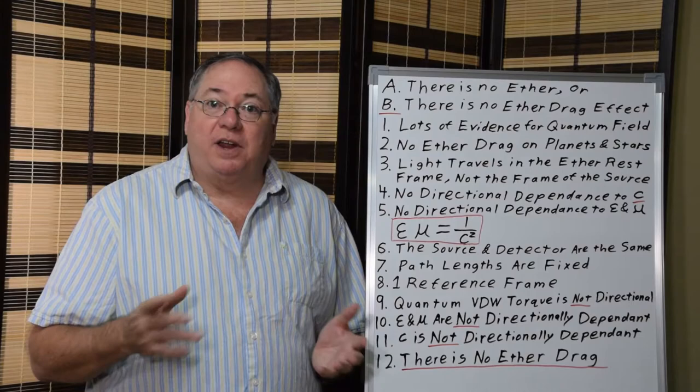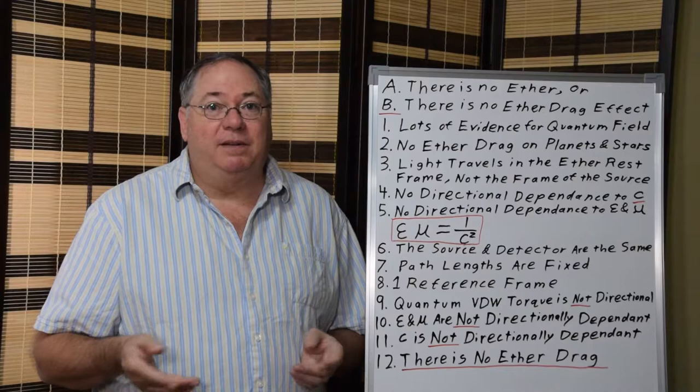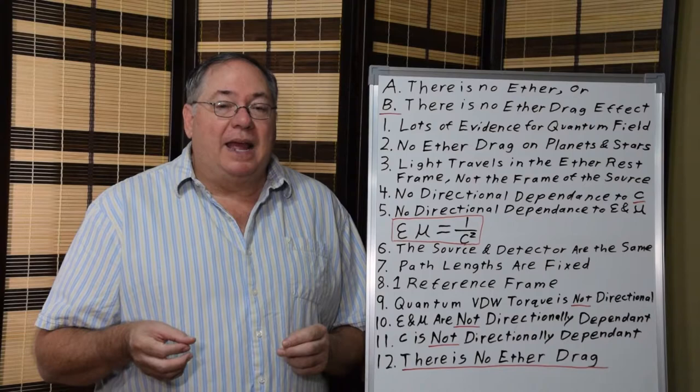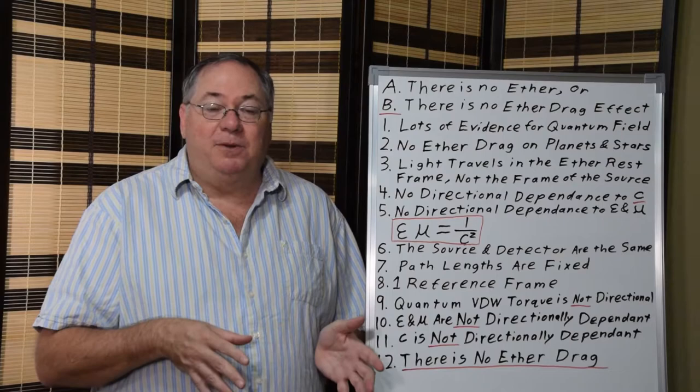And we have this relationship of the electric and magnetic constant multiplied together equals 1 over the speed of light squared. And within the quantum field, it's the electric and magnetic constants that are more fundamental. And that comes about because of the electrical properties of the quantum field because they're made of dipoles.